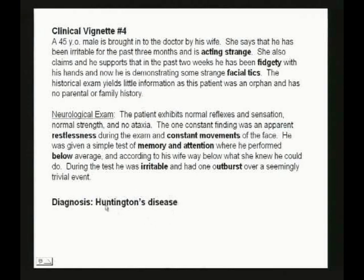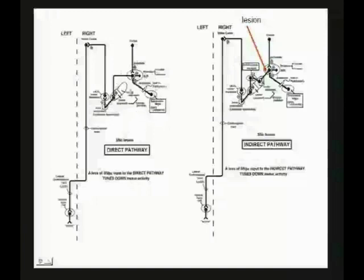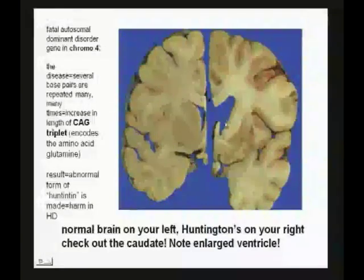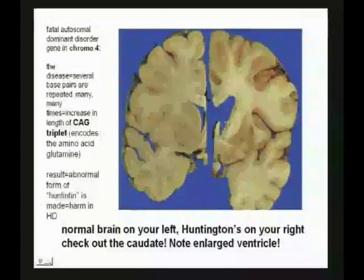Going back to the direct and indirect pathways: the lesion is in the caudate, but only the cells going to the outer segment of the globus pallidus — you're slowing down the indirect pathway. The direct pathway takes over and you get too much movement. What you'll really see is shrinkage of the caudate. The classic sign of Huntington's is shrinking gliosis of the caudate. On imaging you can compare: normal caudate versus the nearly missing caudate in Huntington's, with enlarged ventricles.